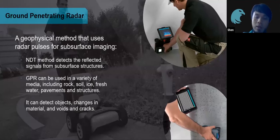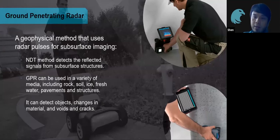What kind of defects or objects can GPR detect? It is very sensitive to metallic objects. However, it can also detect voids and cracks if they are big enough.